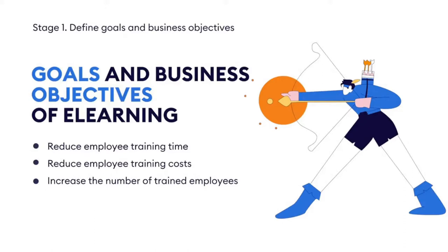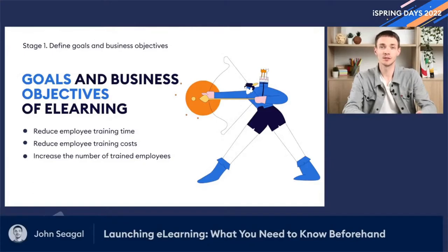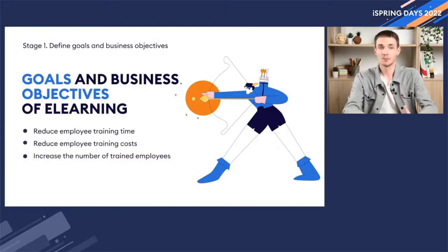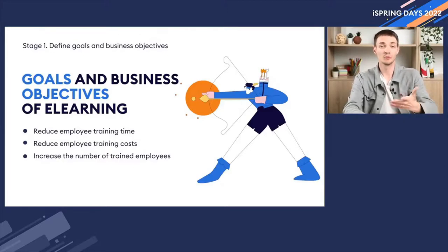Distance e-learning is a project. As with any project, before launching it you need to define goals and objectives. If this is not done, e-learning will become a useless hobby that you waste money on. Stage one: define goals and business objectives. The most common needs clients come to me with are: reduce employee training time, reduce employee training costs, and increase the number of trained employees. All goals must be in SMART format — do any of you know what the SMART acronym represents?